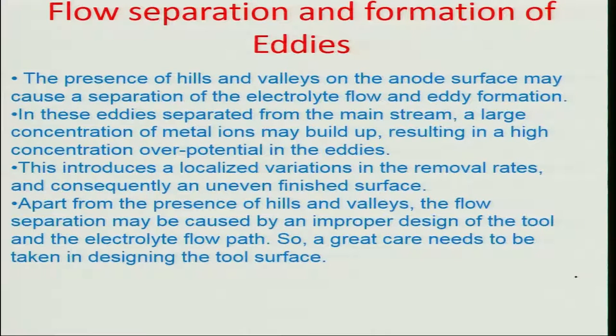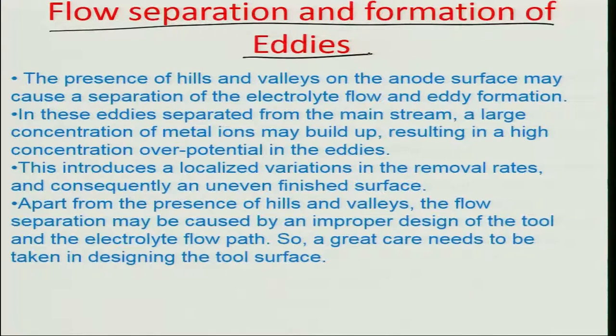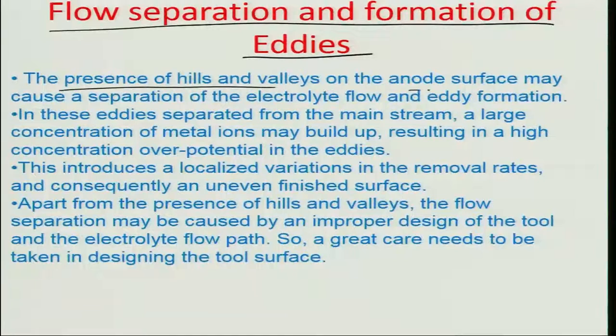Another major cause of improper surface finish in ECM is flow separation and formation of eddies. Eddies are local recirculation zones formed very near the surface because of selective dissolution and corners and crevices. The electrolyte flow is quite slow and laminar due to the inter-electrode gap being very small. As the electrolyte exits the inter-electrode gap there is surface spreading of the electrolyte, and the presence of hills and valleys on the anode surface due to dissolution causes separation of the electrolyte flow and eddy formation.